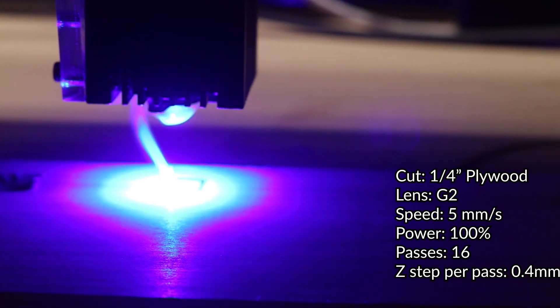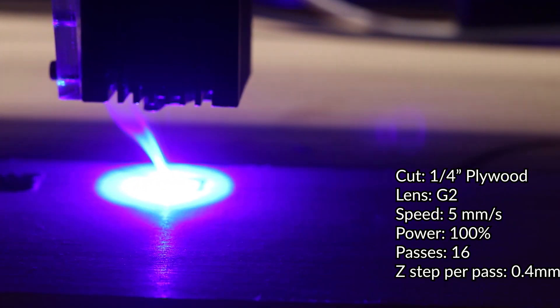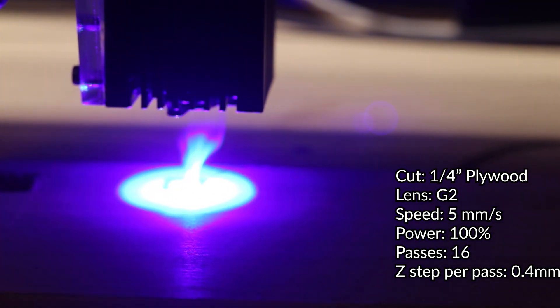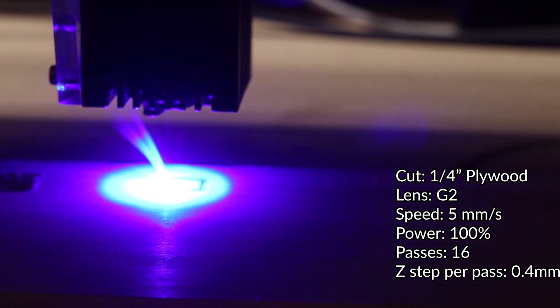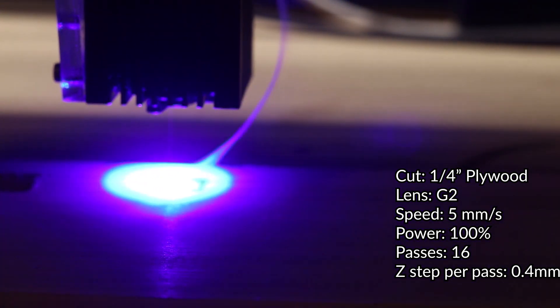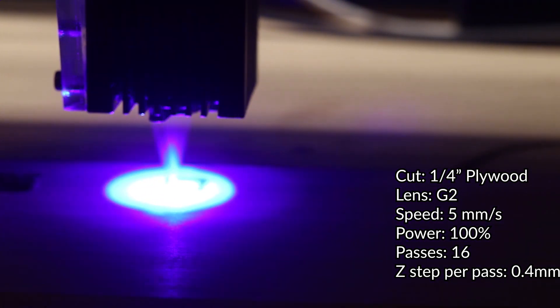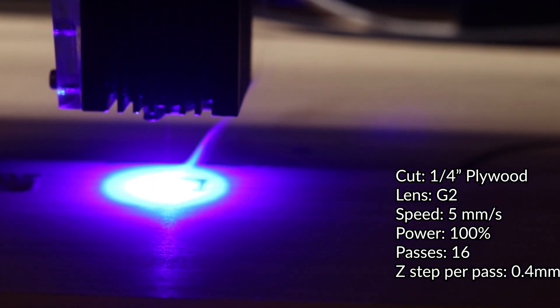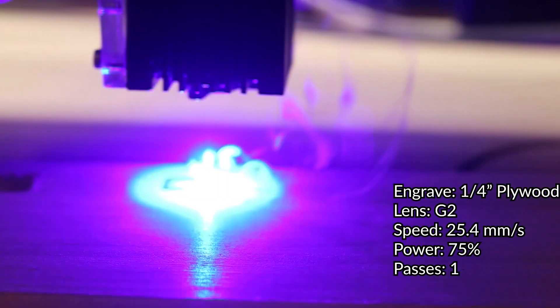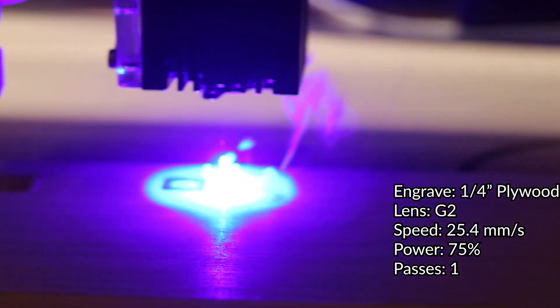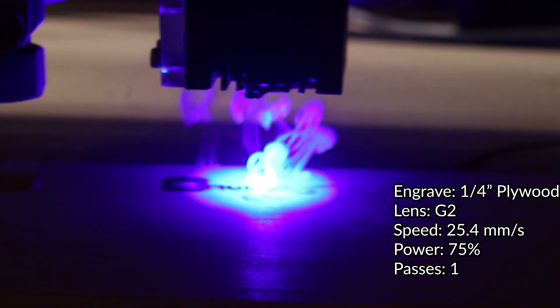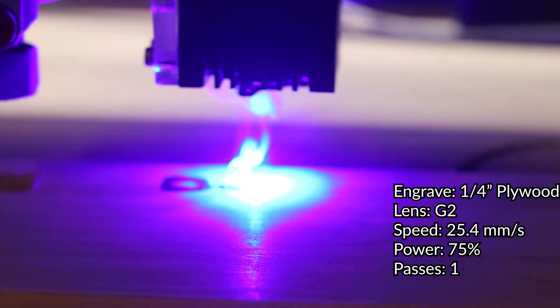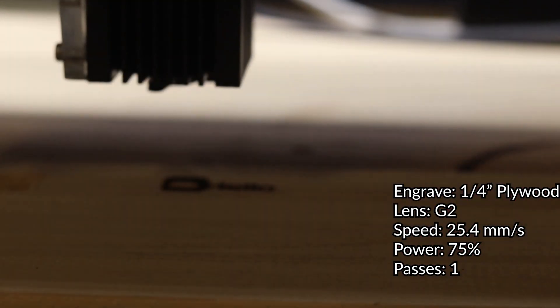So I would recommend for thicker pieces of wood or even acrylic: more passes, higher speed, and if that doesn't work you can even look at lowering the power. As you can see, you can easily cut 1/4 inch plywood.